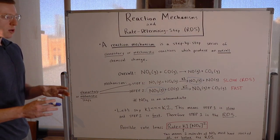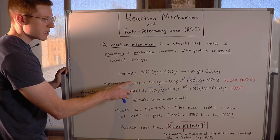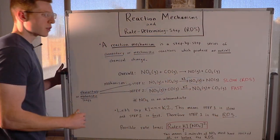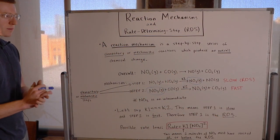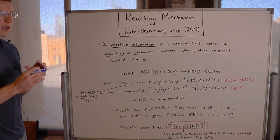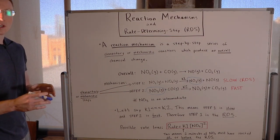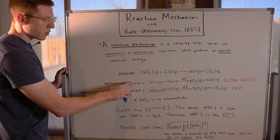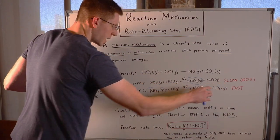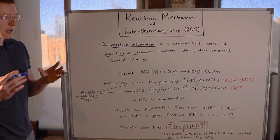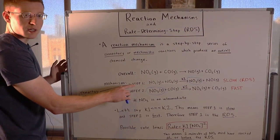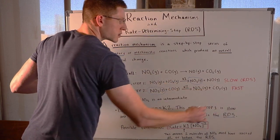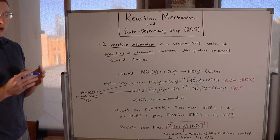Whenever you have a slow step in an overall mechanism, we call that the rate determining step — in other words, it determines the rate. Think about it like this: a team is only as fast as its slowest player, just like an overall mechanism is only as fast as its slowest step. It doesn't matter how fast step 2 is if step 1 hasn't finished yet. We have to wait for step 1 to finish, and since it's the slow step, it's going to determine our rate.